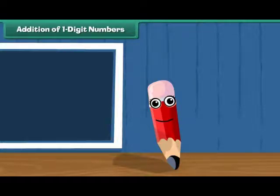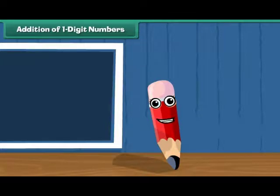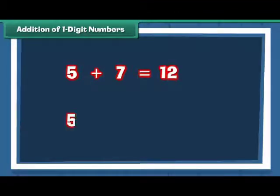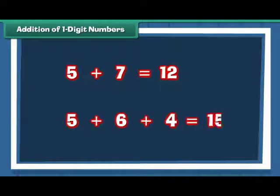Addition of 1 digit numbers. Let us begin with the addition of single digit numbers. 5 plus 7 is equal to 12. 5 plus 6 plus 4 is equal to 15.